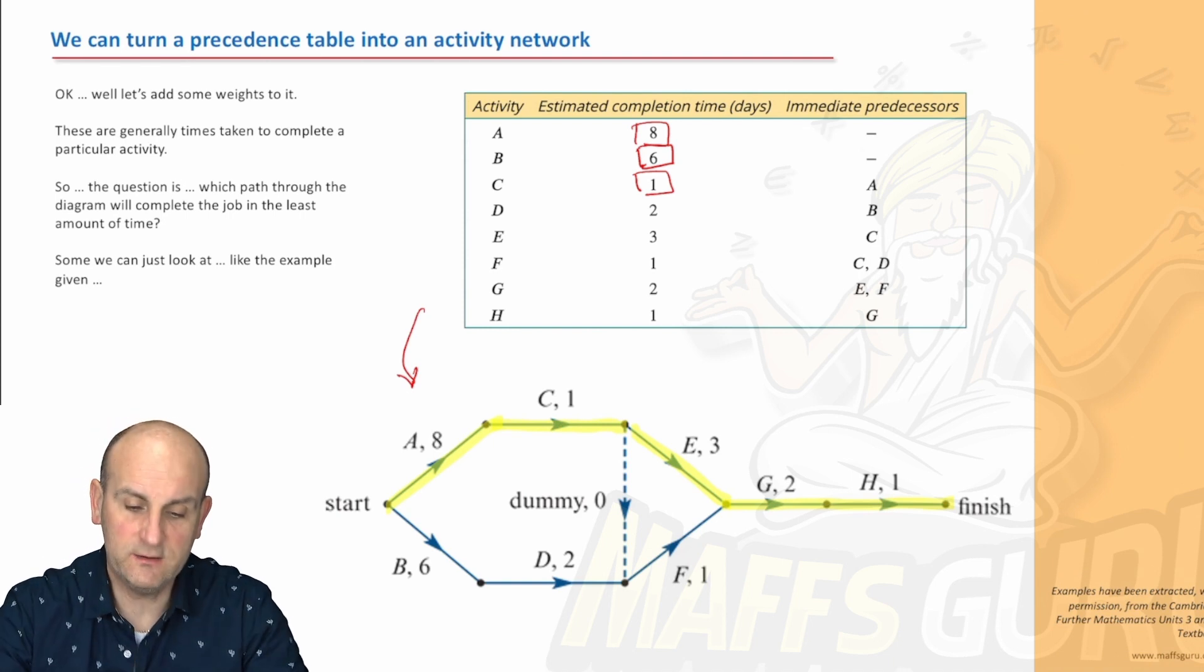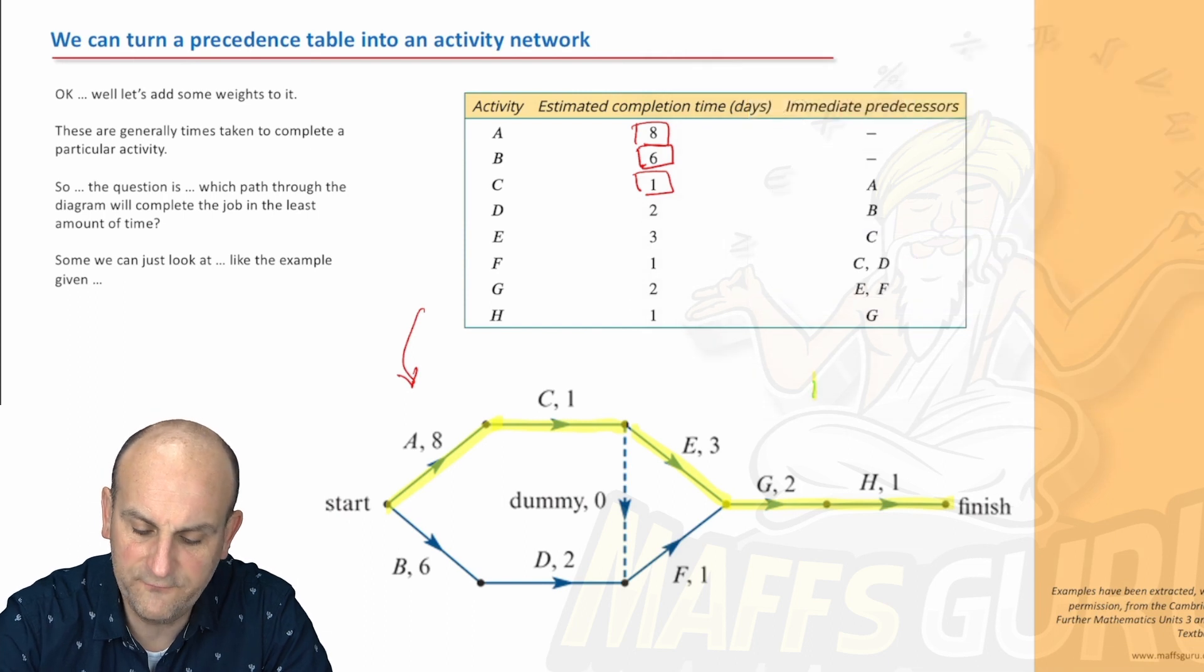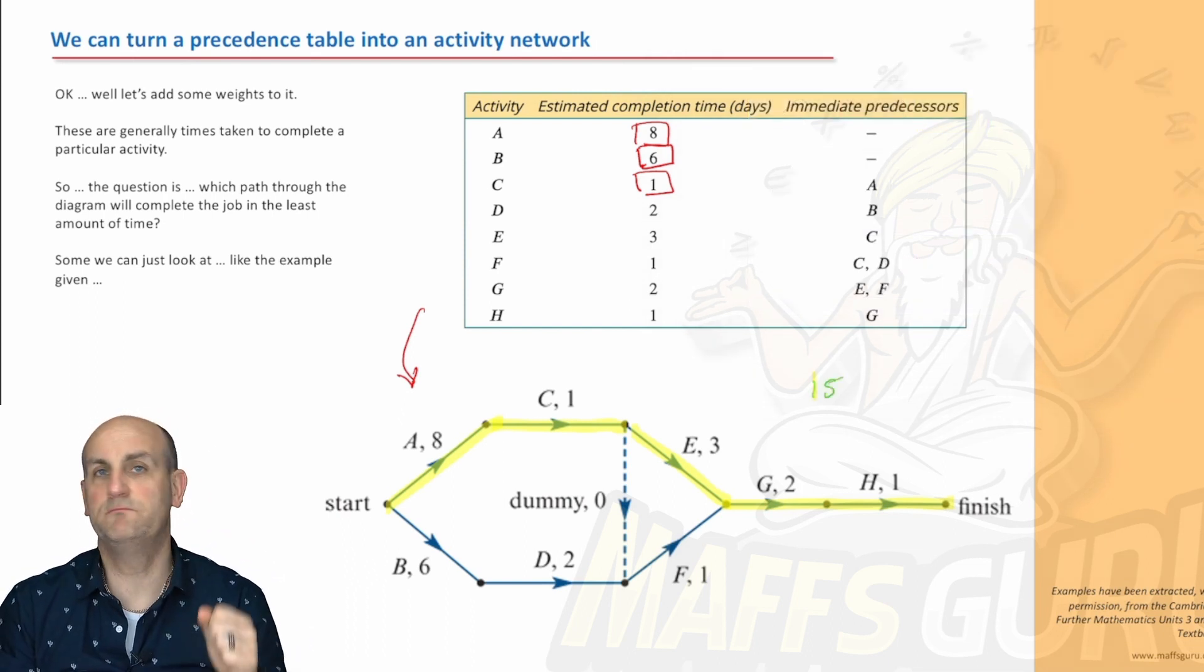And if we added those numbers together, what would we get? 8, 9, 10, 11, 12, 13, 14, 15. So that would be 15 days to go that way. Is that the best way of doing it? Is that the only way of doing it? No.